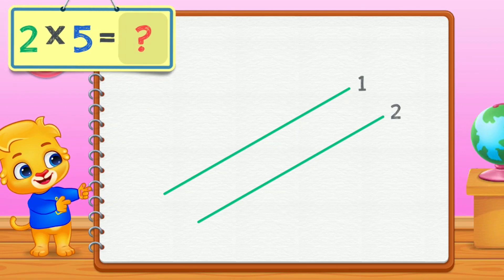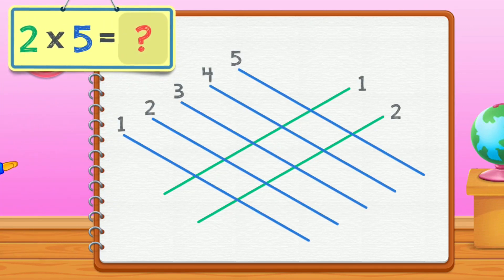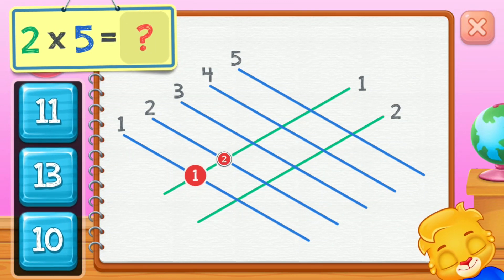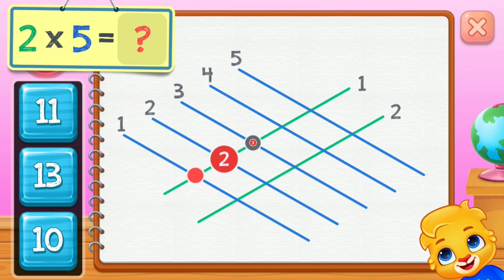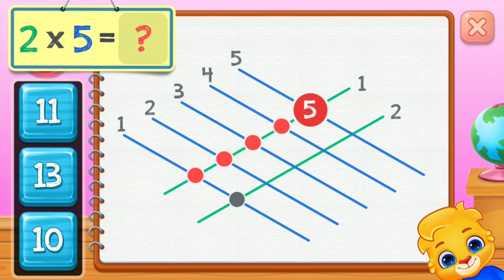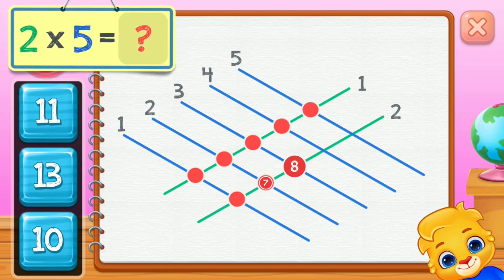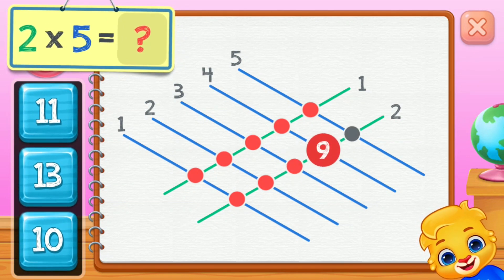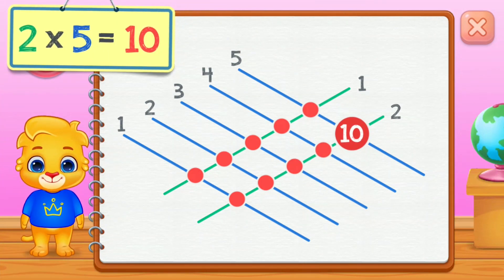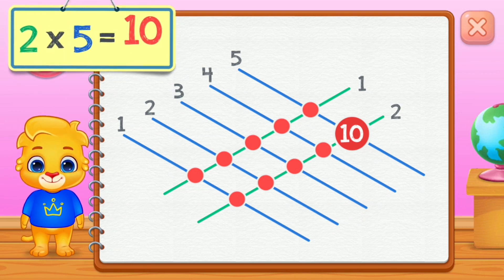Two times five equals — one, two, three, four, five, six, seven, eight, nine, ten. Two times five equals ten.